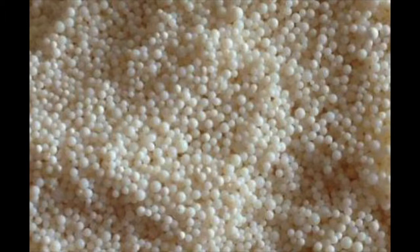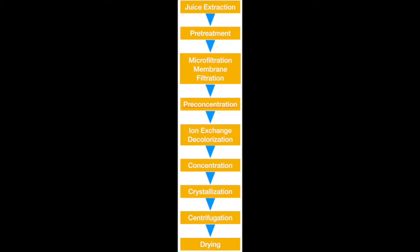Concentration: The sucrose juice obtained in Step F is sent to an evaporator for concentration, and the sugar liquid is concentrated to a hammer of 65-75 to obtain a sucrose concentrate. Crystallization.